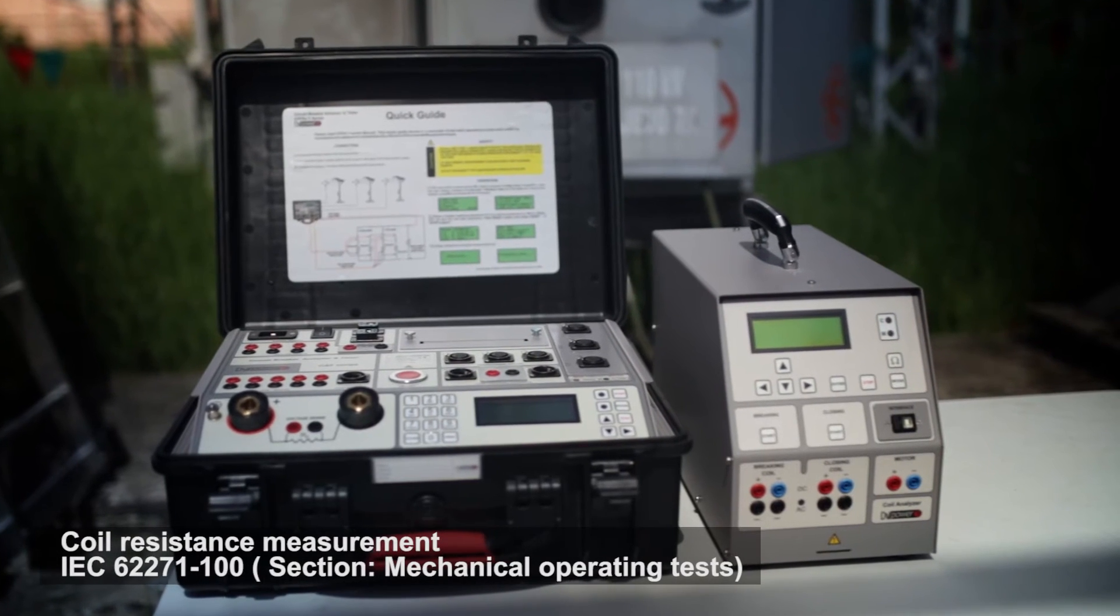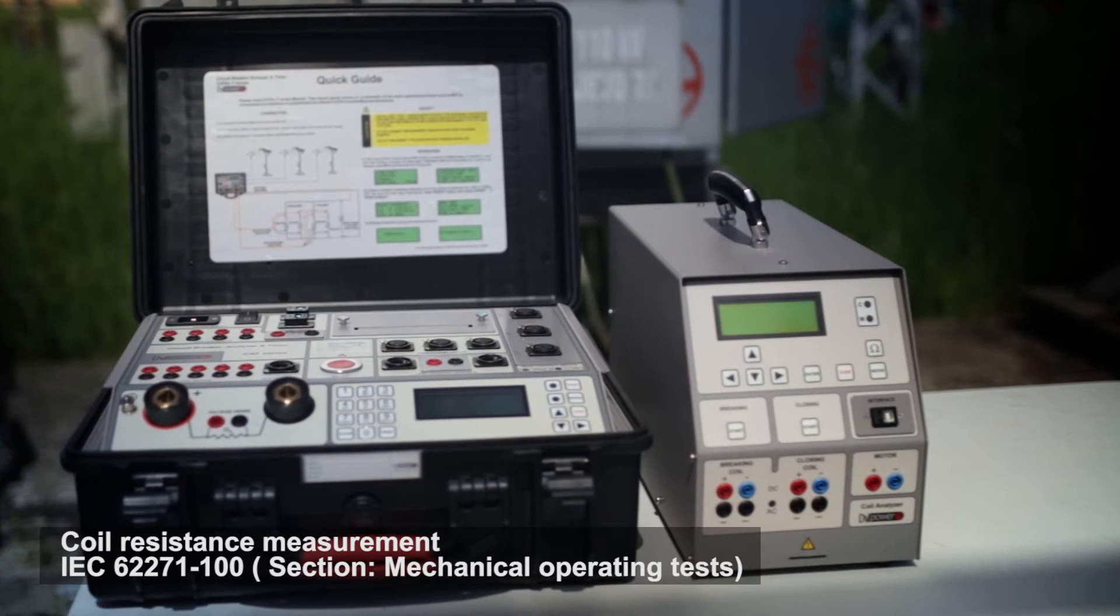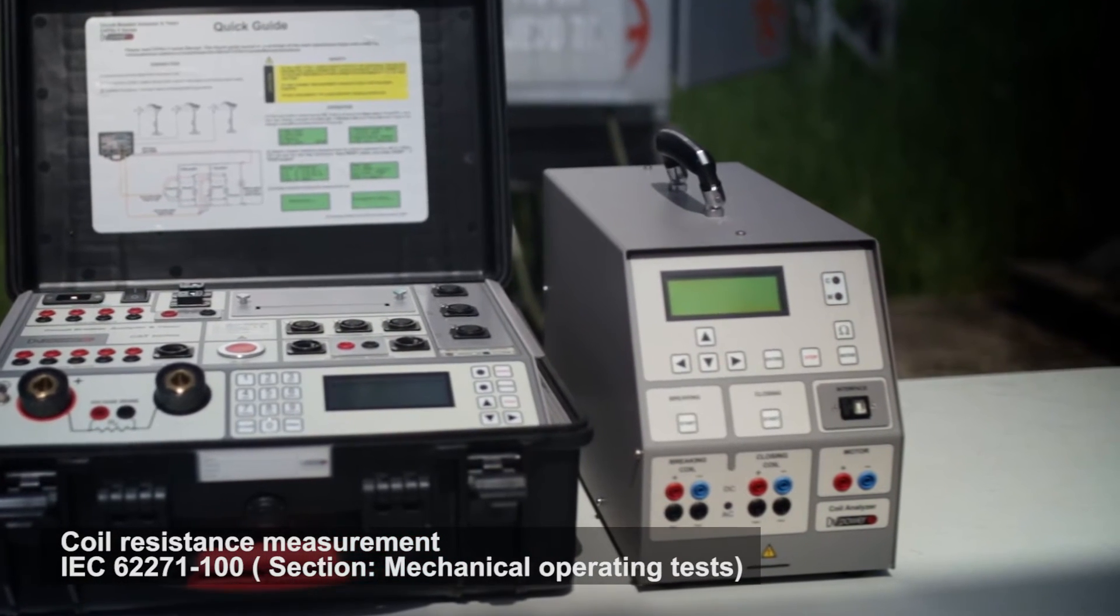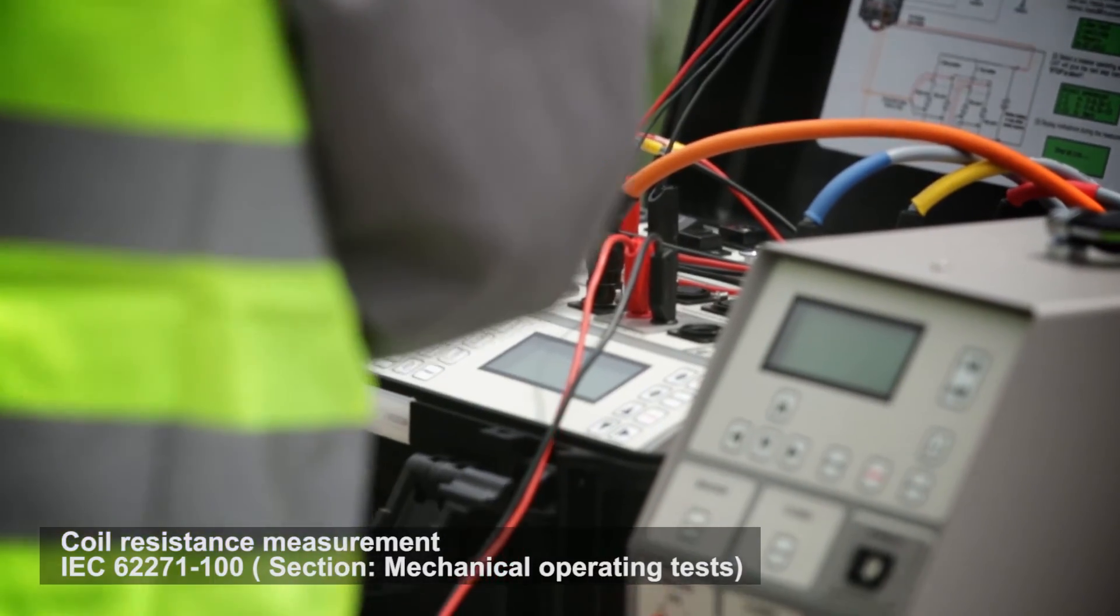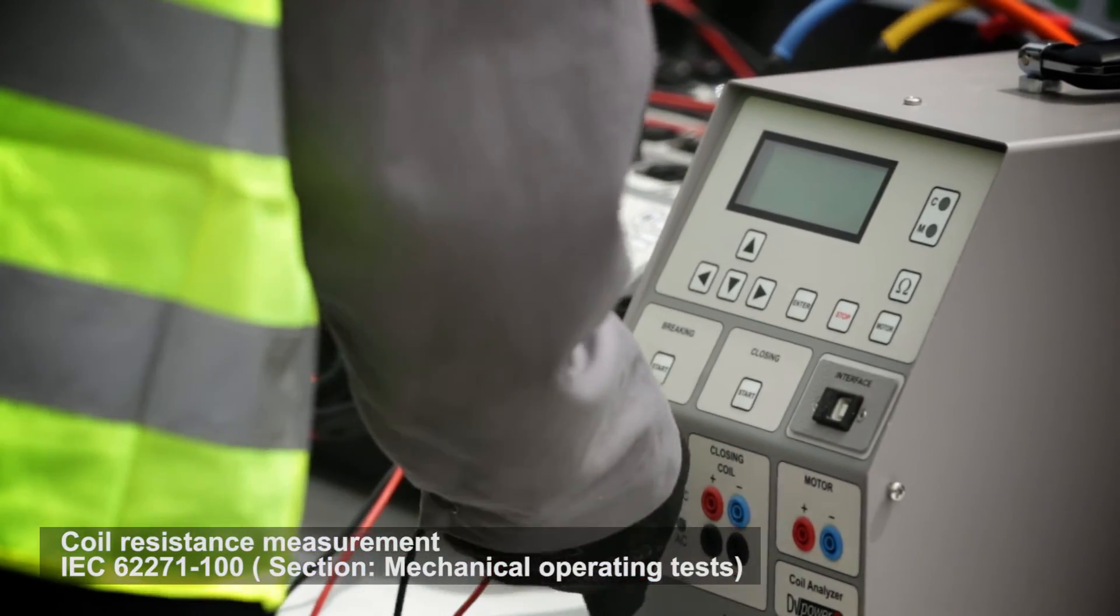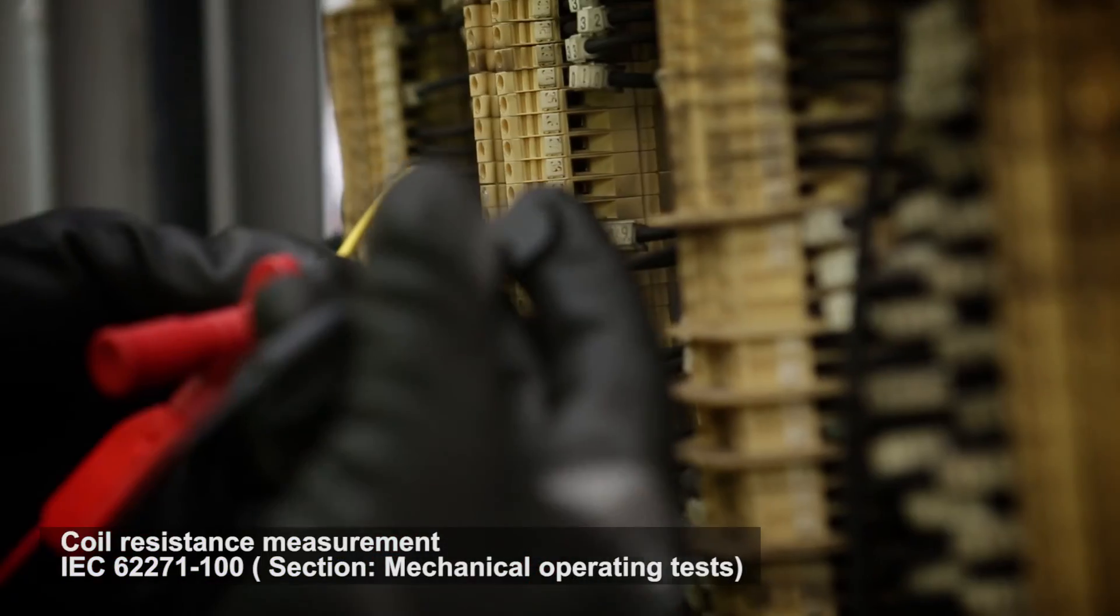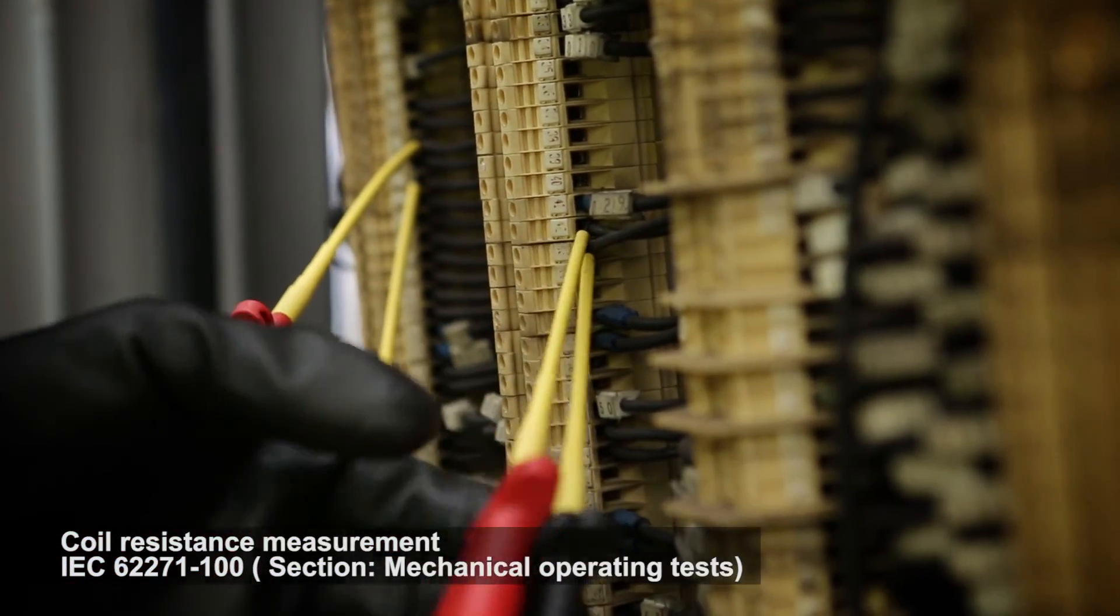The SAT instrument can measure the trip and close coil resistances. Its measurement procedure generates a very low current through the coil, which would not heat up the coil and consequently increase its resistance. The corresponding voltage drop is measured across the coil and used to calculate resistance according to Ohm's law.